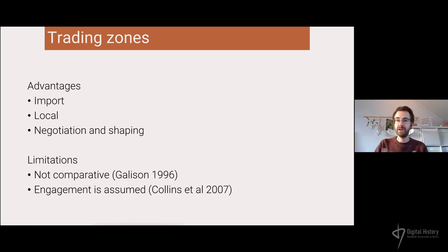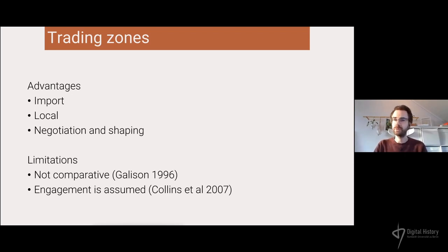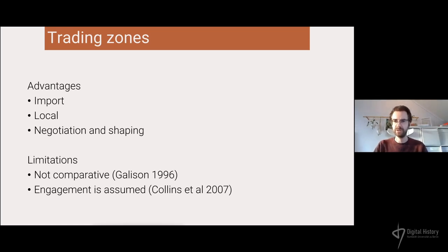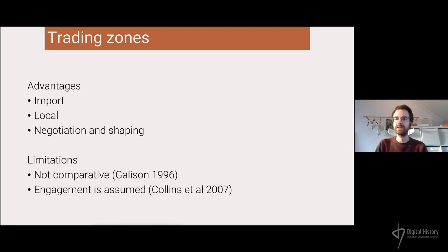The advantages of this concept are that it's explicitly about the importing of methods and tools, it emphasizes the local instantiations of digital history rather than the global 'big tent' debate of digital humanities, and it emphasizes the process of negotiation and shaping. However, there are limitations: Gallison's original usage had no comparative approach — he analyzed just one trading zone. Harry Collins and colleagues provided a comparative approach but assumed engagement, saying without engagement there is no trading zone. I wanted to look at how engagement is conducted — whether there are different forms of engagement.